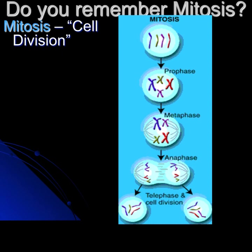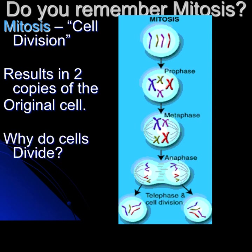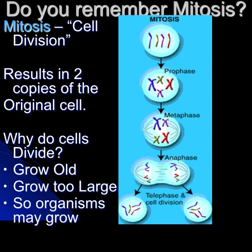Mitosis is cell division. It results in two copies of the original cell. Why do cells divide? They can grow old, grow too large, and organisms may grow — you need more cells sometimes.